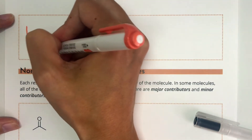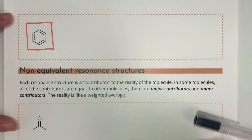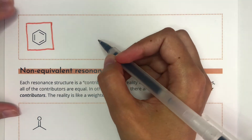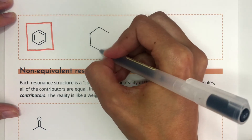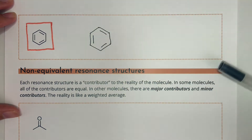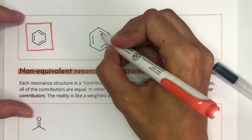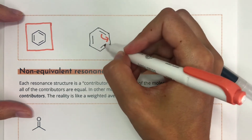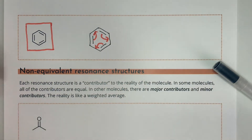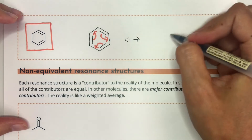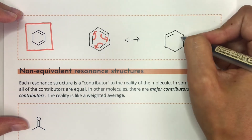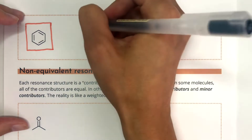This next example is benzene — you've probably seen this molecule before. Benzene is a six-membered ring with three double bonds in the ring, and each of the carbons has one implicit hydrogen. We can move this pi bond down, but because we can't have five bonds to a carbon we've got to move the next pi bond and the next pi bond over as well. That results in another benzene molecule where we've just displaced the pi bonds — that's how we generate the other resonance structure of benzene.